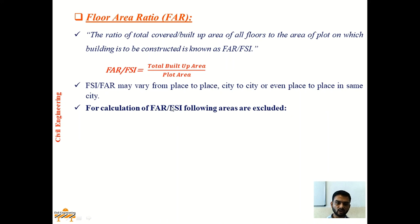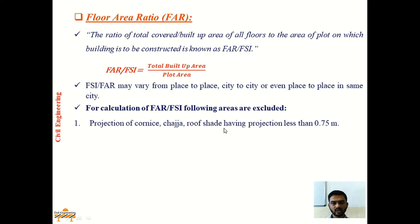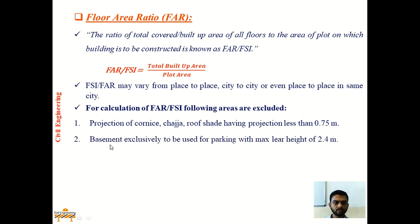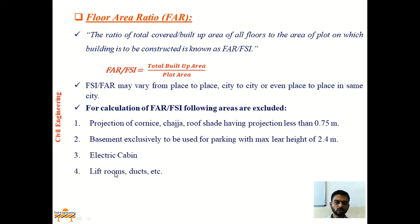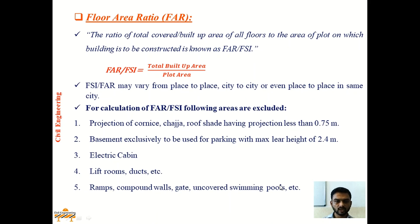For calculation of FAR or FSI, certain areas are to be excluded: projections of cornice, chajja, roof, or shed having projection less than 0.75 meter; basement used exclusively for parking with maximum clear height of 2.4 meters; electric cabin, lift room, ducts; ramps, compound walls, gate, uncovered swimming pools; and pump house, water tanks, etc. These are all to be excluded when calculating the total built-up area for FSI.